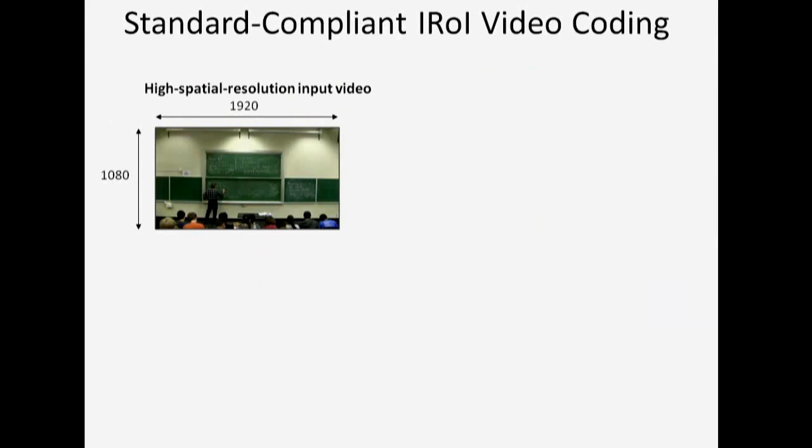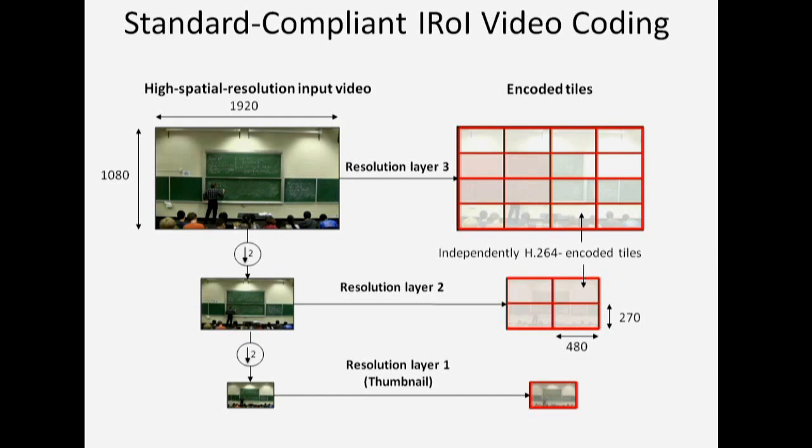Now, let's go over the system components in more detail. The interactive region of interest transcoder first down-samples the video to generate multiple resolution layers. Each layer is then divided into a number of tiles. Each tile is an independently decodable H.264 stream.